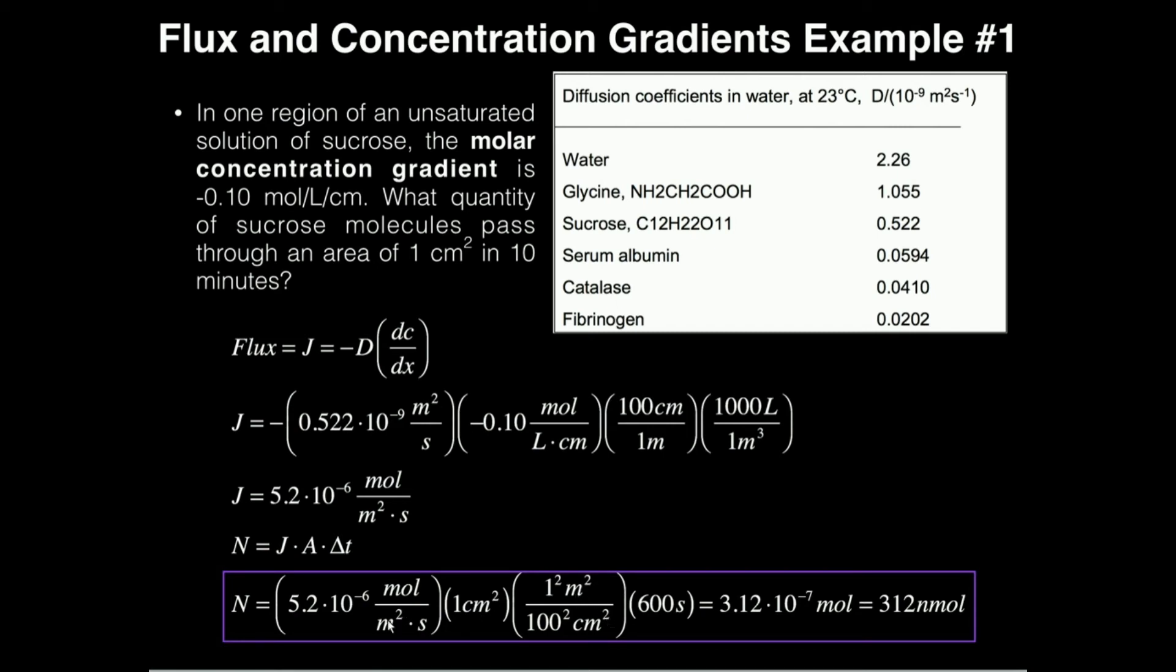Meter squared cancels, and the seconds cancel. And my only units left are moles. When I multiply all the numbers together, I get 3.12 times 10 to the minus seventh moles. And if I were to multiply this times 10 to the ninth, I would get units of nanomoles, and it would be 312 nanomoles.